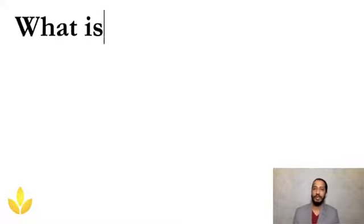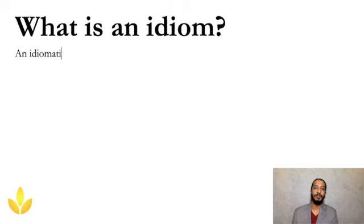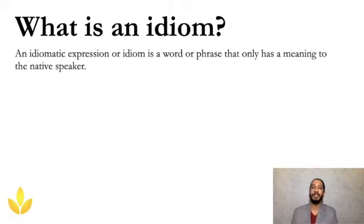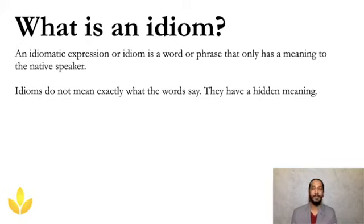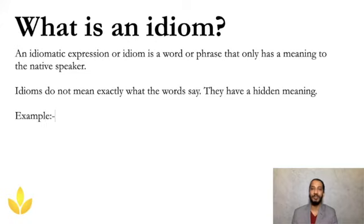So what is an idiom? An idiom is a word or a phrase that only has a meaning to the native speaker. Idioms do not mean exactly what they say — they usually have a hidden meaning. Let's see an example of what an idiom tells us and what makes it different.